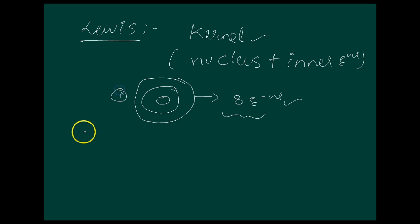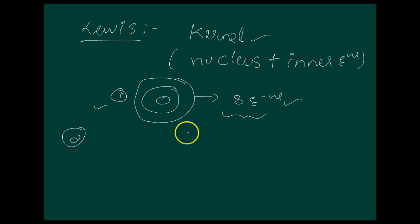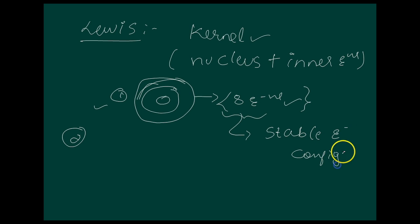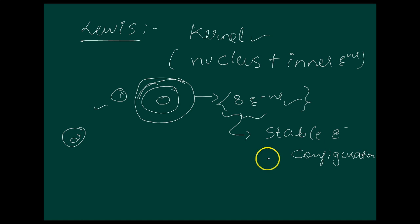The outer shell can have a maximum of 8 electrons. This octet of electrons represents a particularly stable electronic configuration. Lewis postulated that atoms achieve this stable octet when they are linked by chemical bonds.